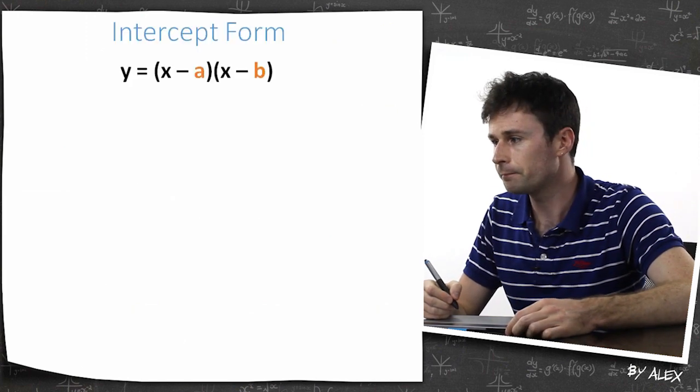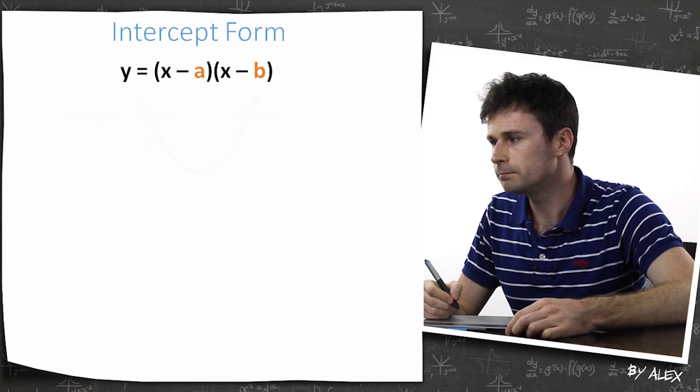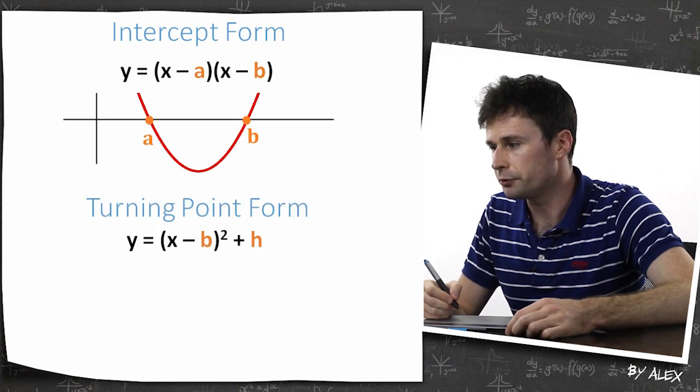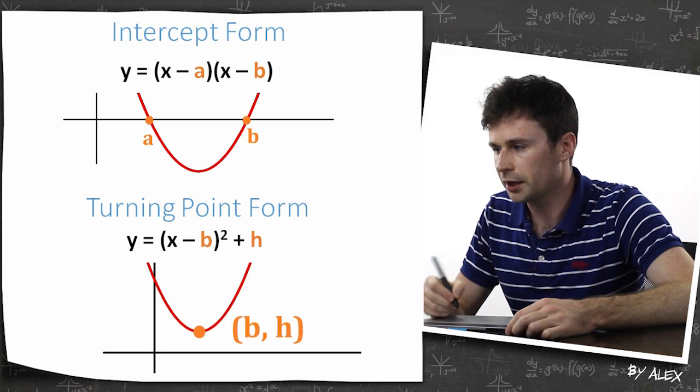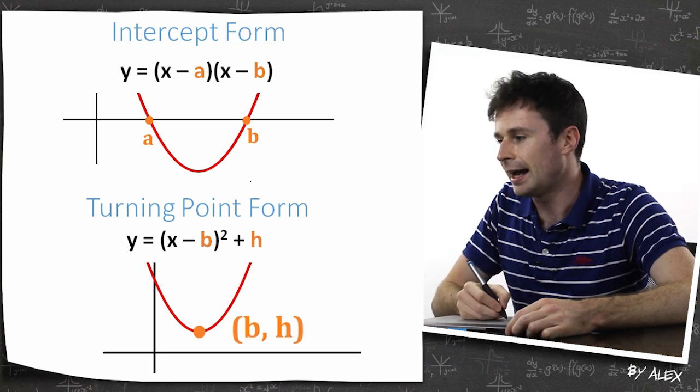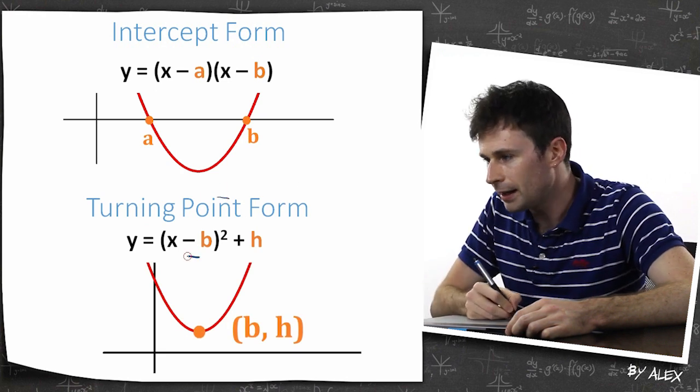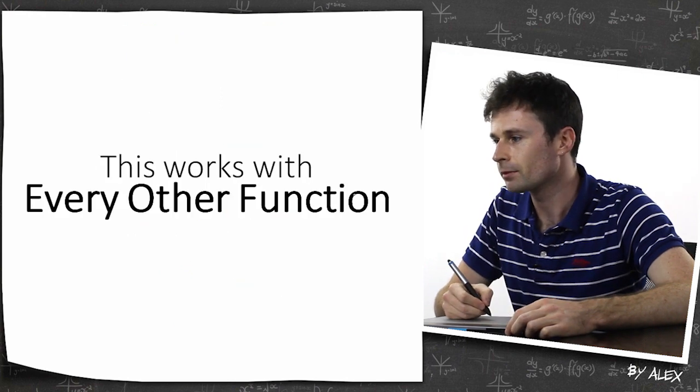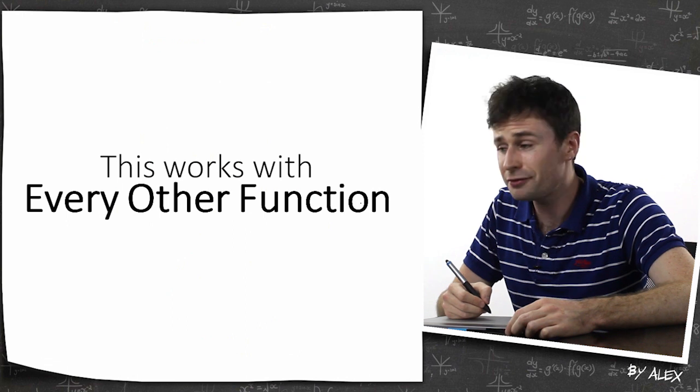So a quick parabola review. If you've got the intercept form, you draw it like this. If you've got the turning point form, we know that the turning point is going to be b, h. Even though the b is negative, we actually make that a positive, so it's going to be b, h. So this works with every other function.